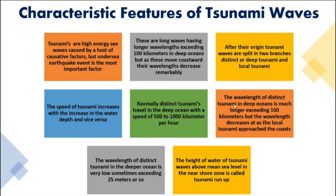Now, the characteristic features of tsunami waves. First, tsunamis are high-energy sea waves caused by two factors: undersea earthquakes, landslides, or volcanic eruptions — but the undersea earthquake is the most important factor, specifically of magnitude 7.5 or more. Tsunami waves are long waves having wavelengths of more than 100 kilometers.